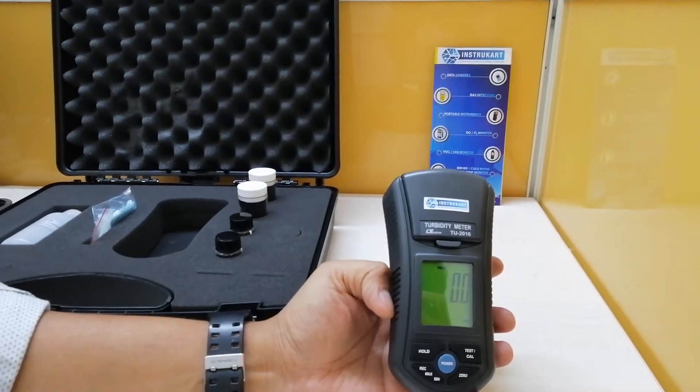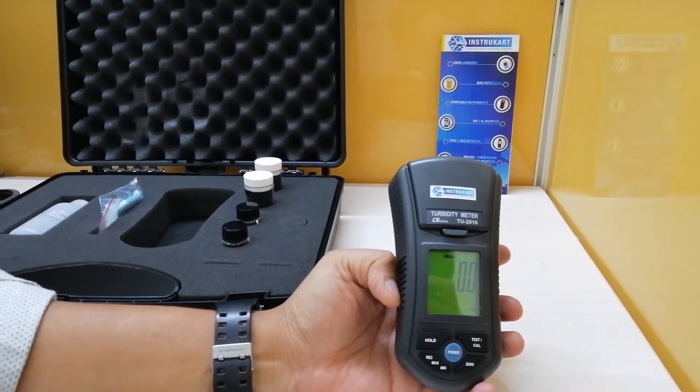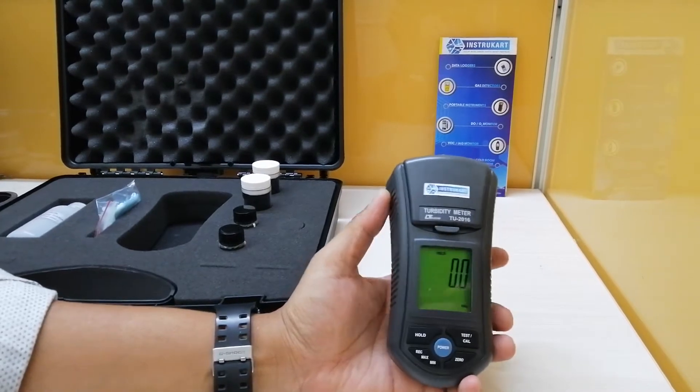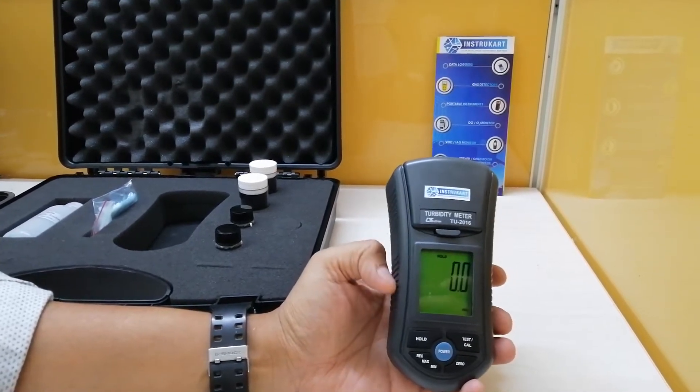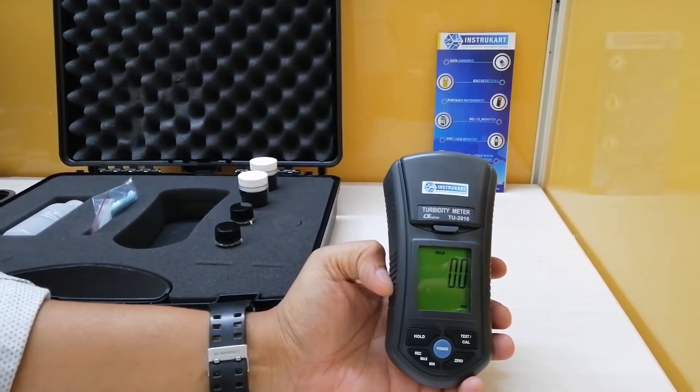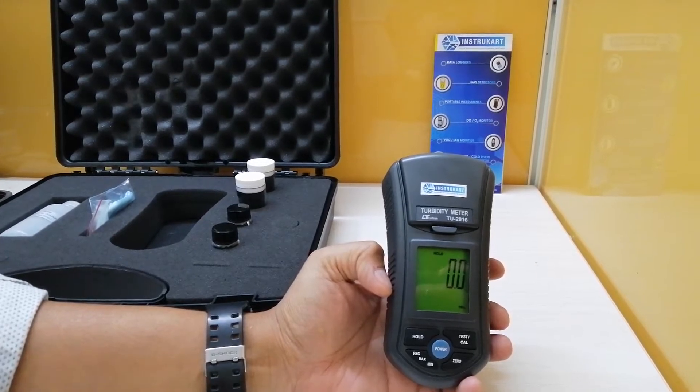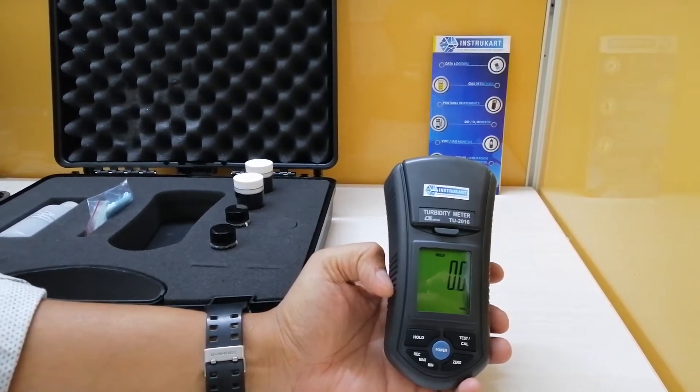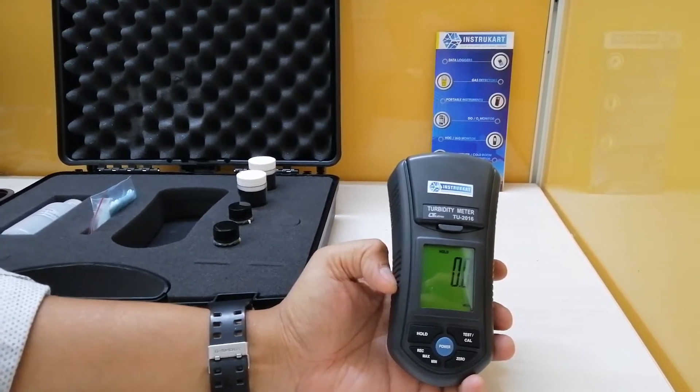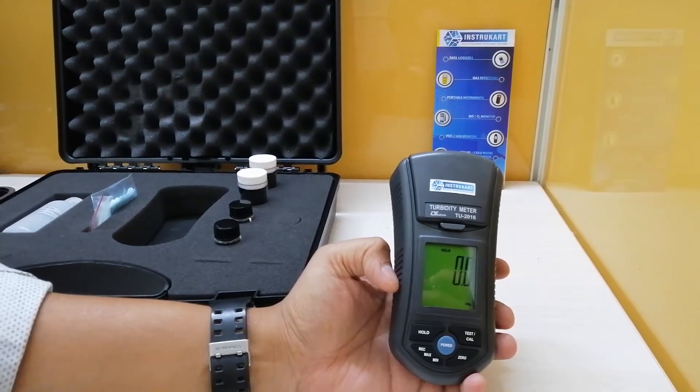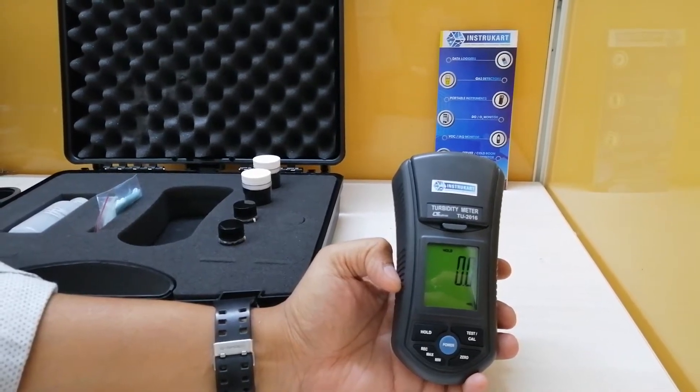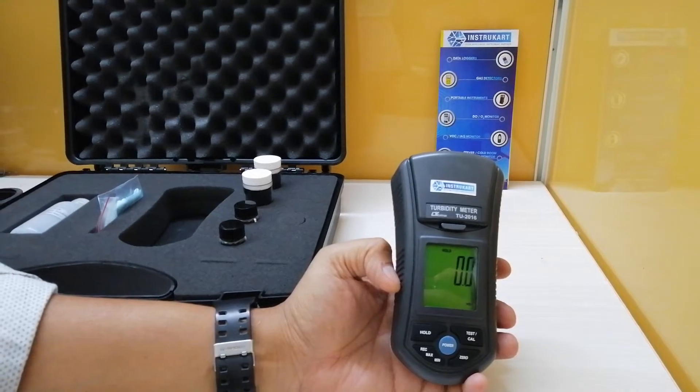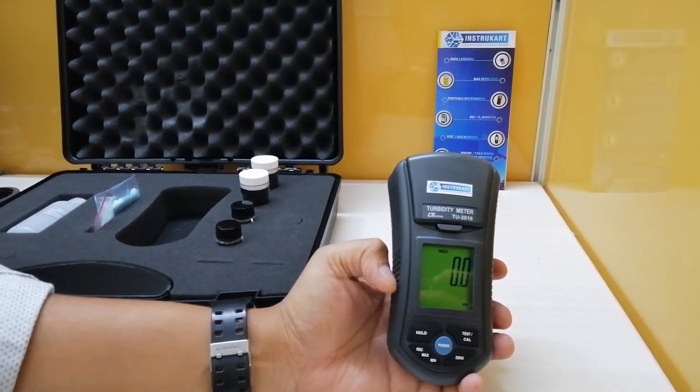Hello and welcome to Instracart Holdings, your worldwide instrument partner. We have a turbidity meter from Lutron, model number TU2016, which is a high-performance turbidity meter that gives you results on suspended particles in water that make the water polluted.